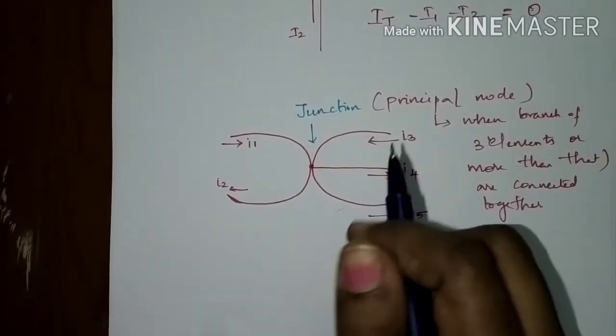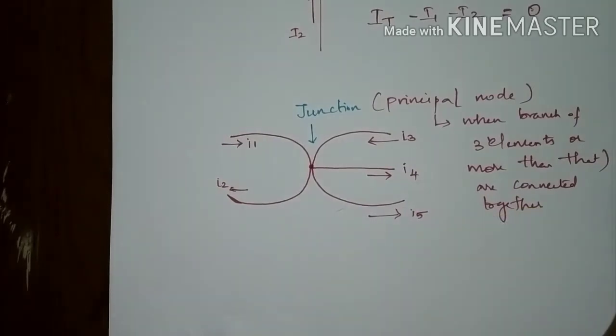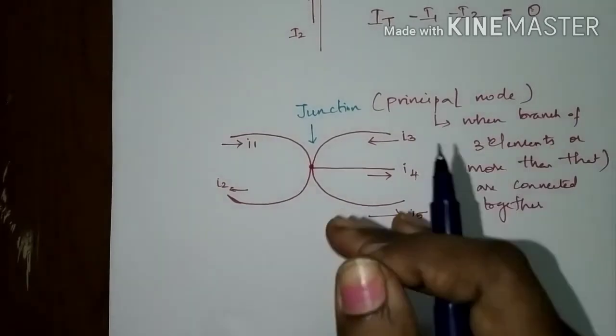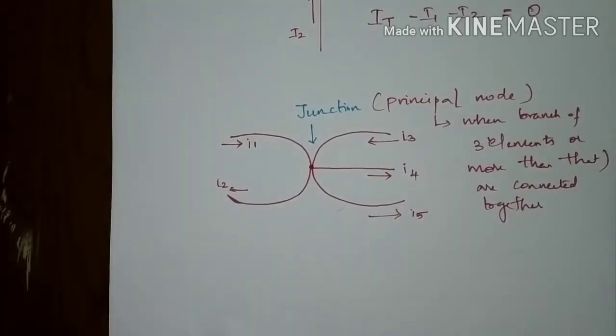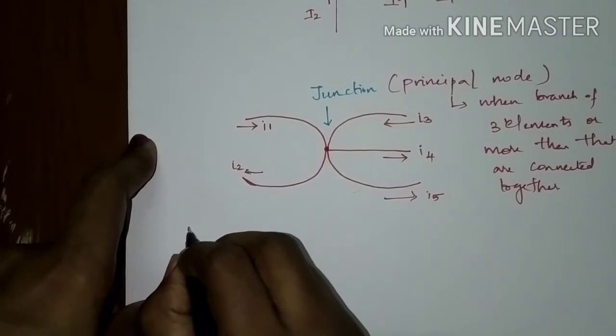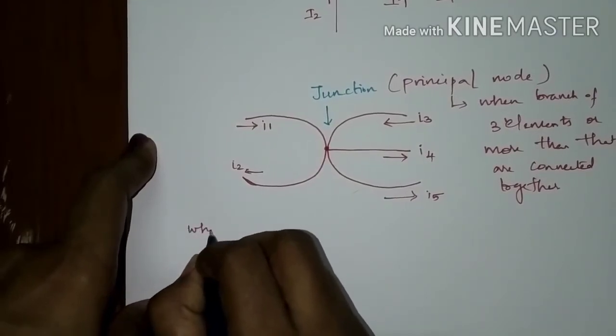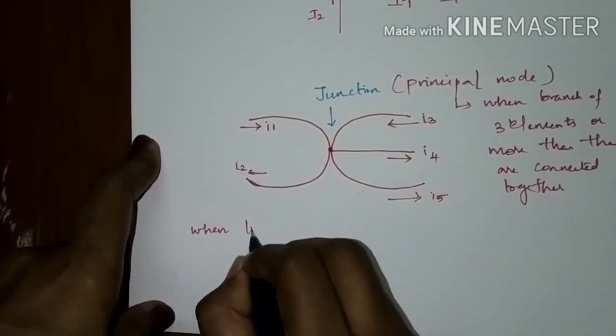Why is it a simple node? It has no other path to deviate — the current has to move in that direction only. So when two branches are connected together, that node is said to be a simple node.